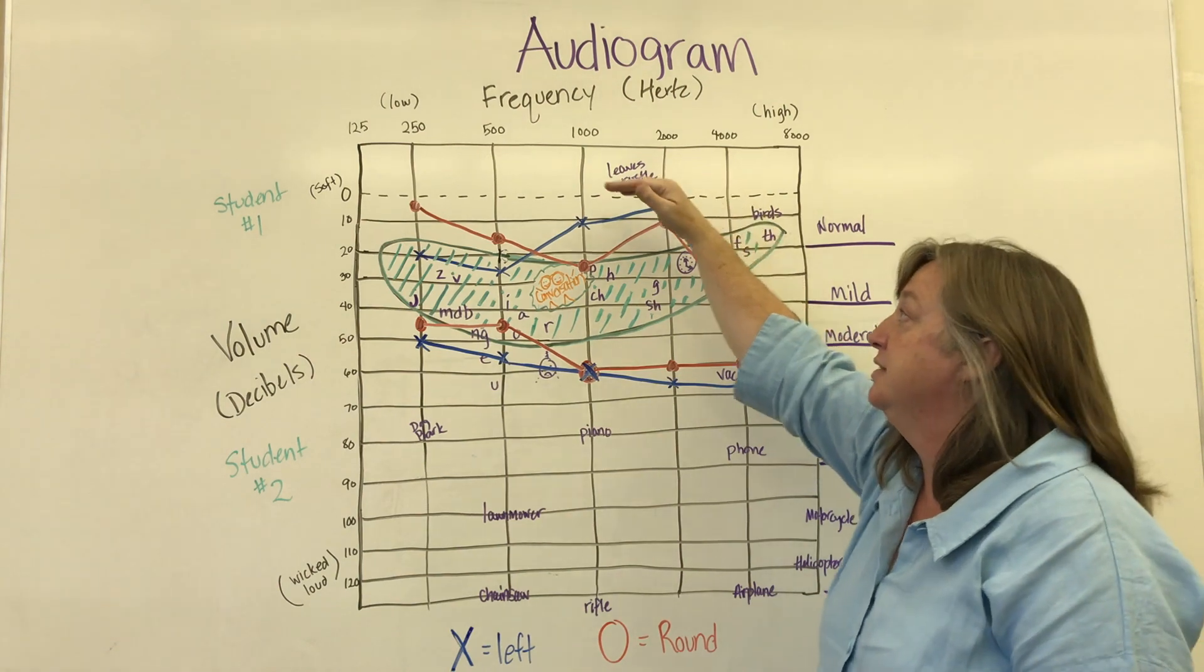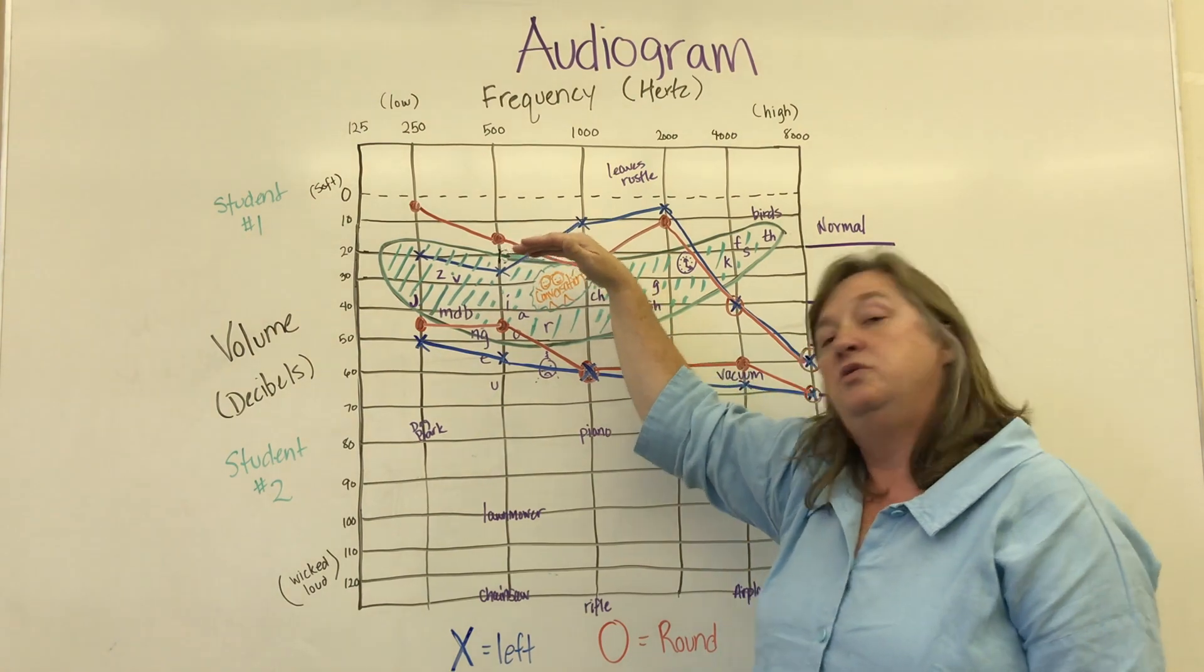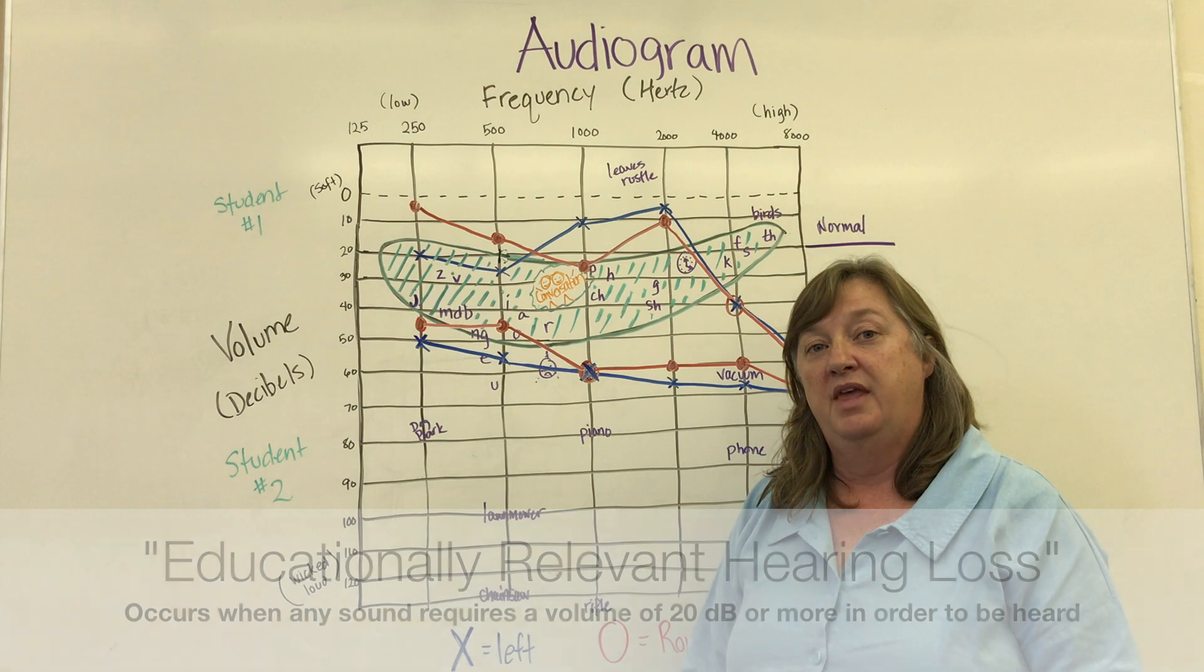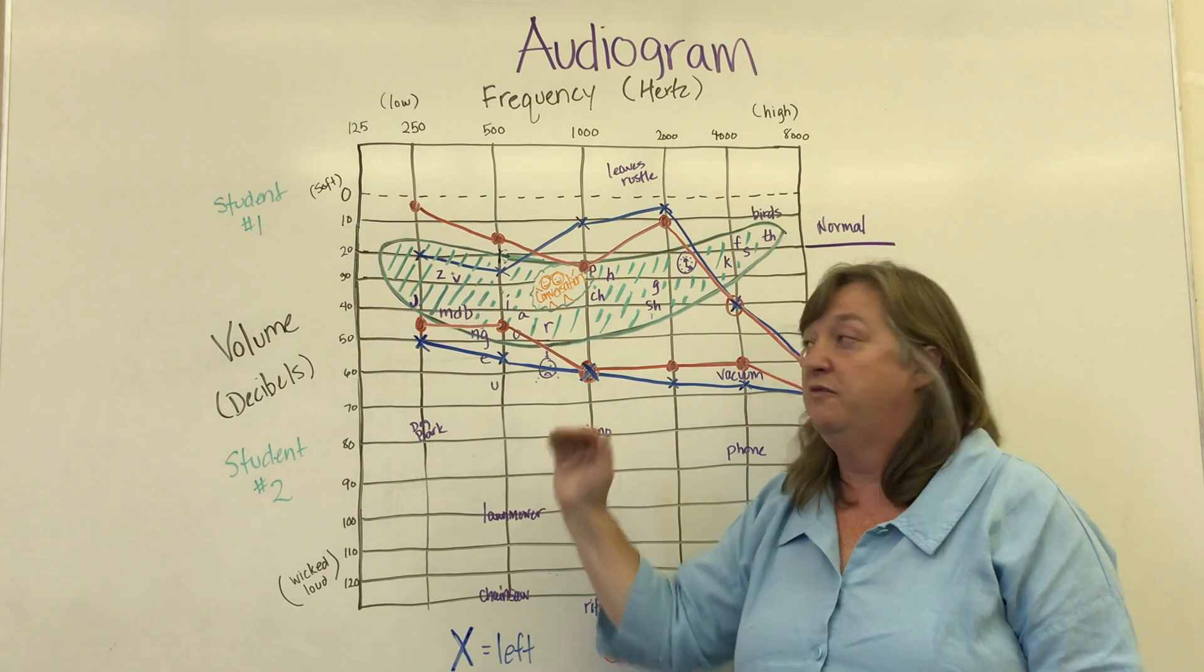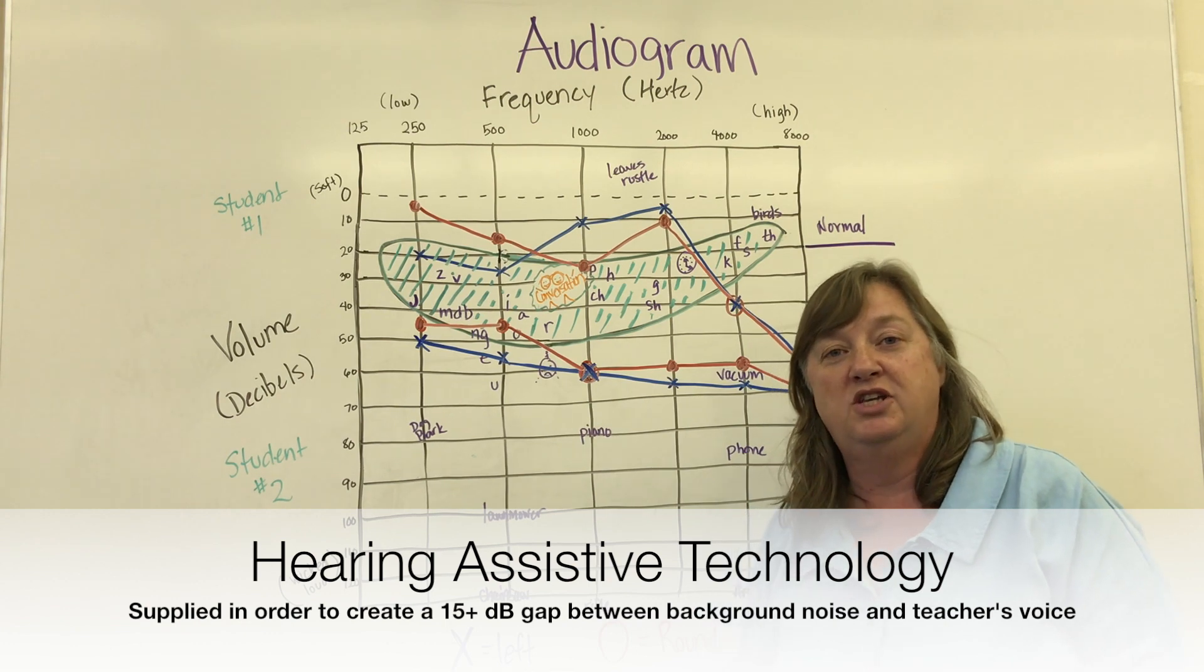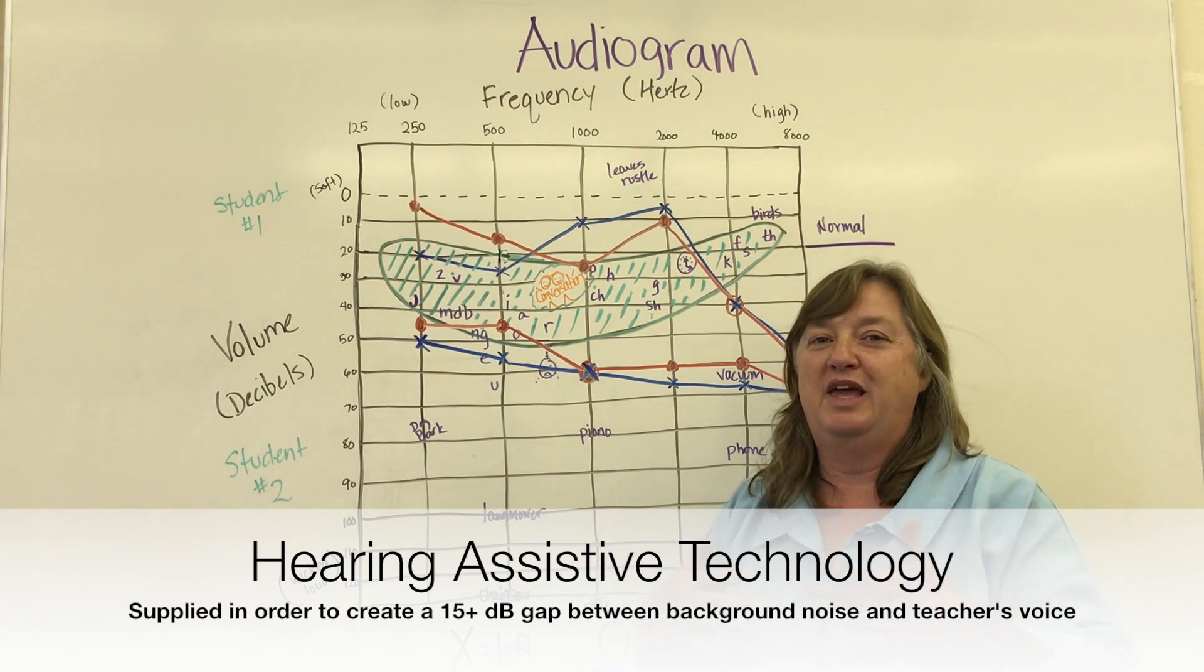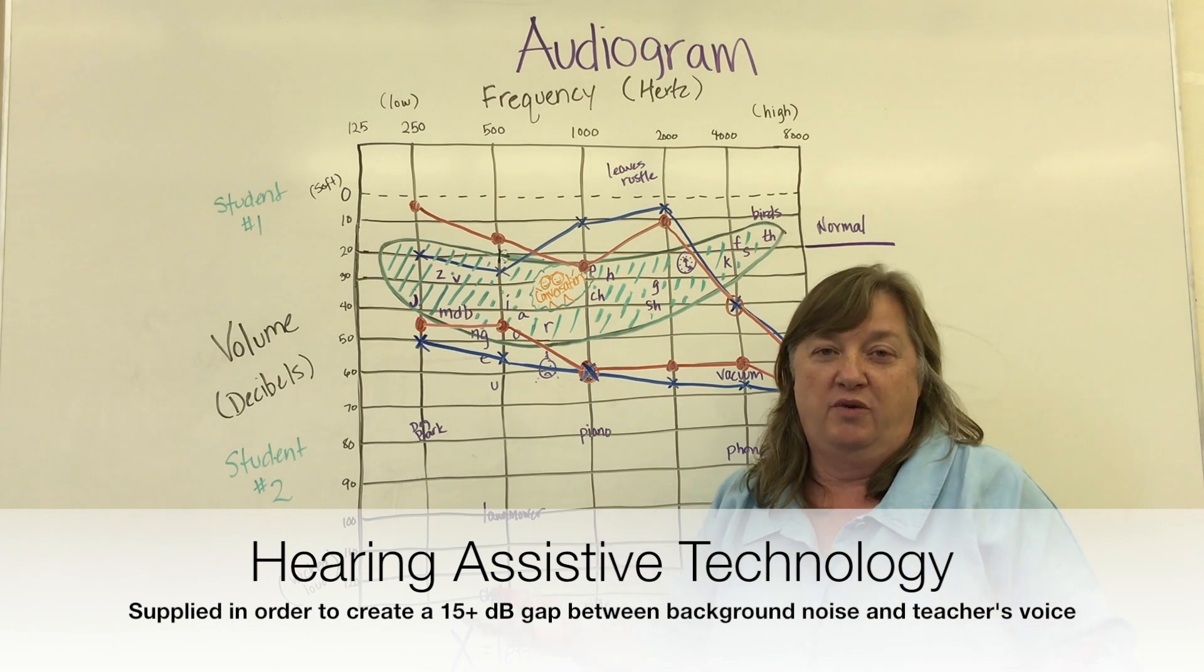Chances are your hearing is somewhere from minus 10 to 20. A student is considered to have an educationally relevant hearing loss if they have anything below the line of 20. That's why we offer them hearing assistive technology so that they can be boosted into that normal range. The goal of that technology is to create a 15 decibel gap between the voice of instruction and the background noise that is already present in a room.